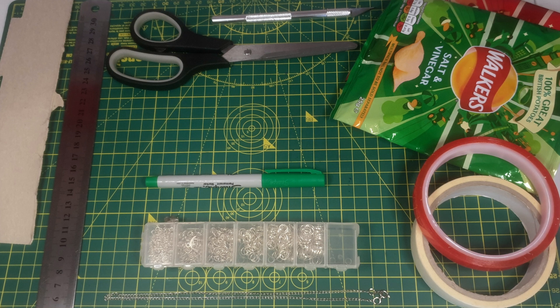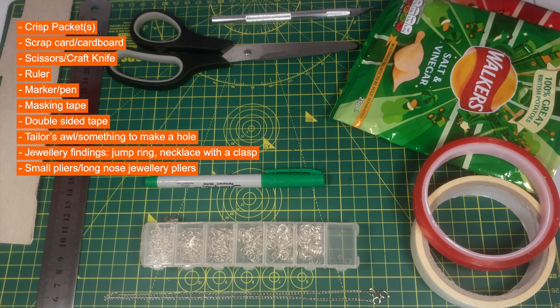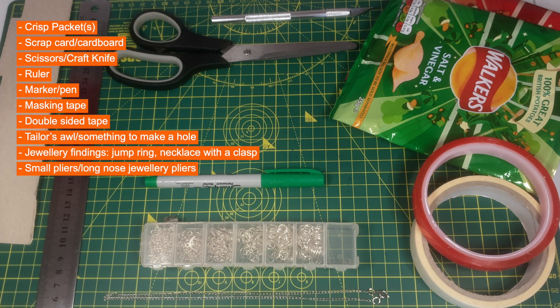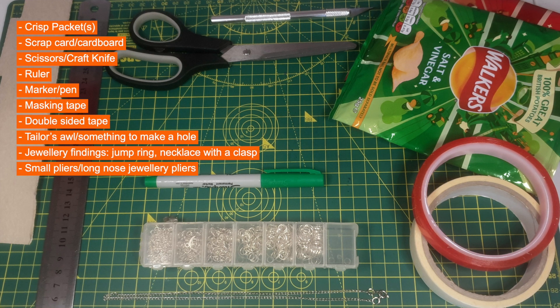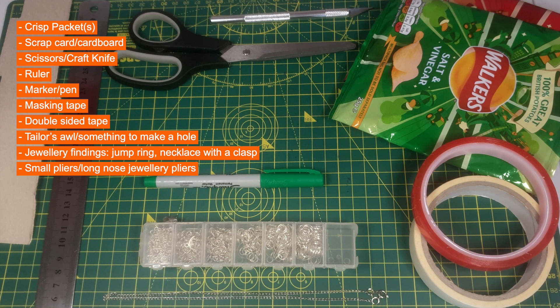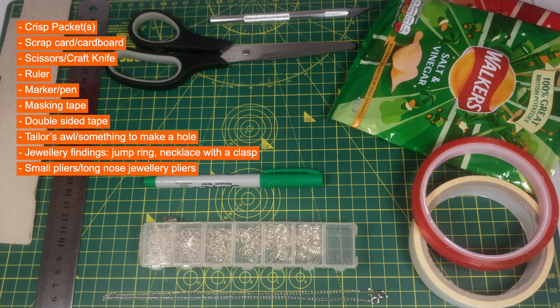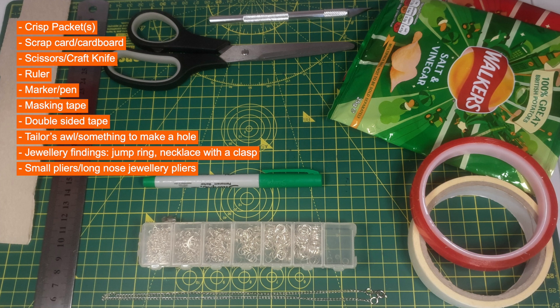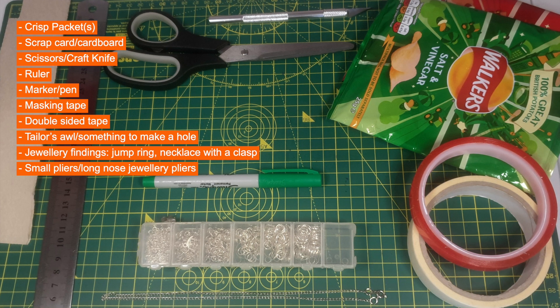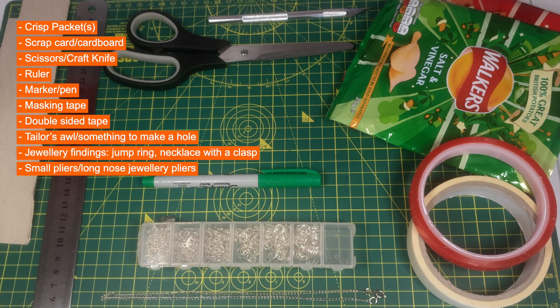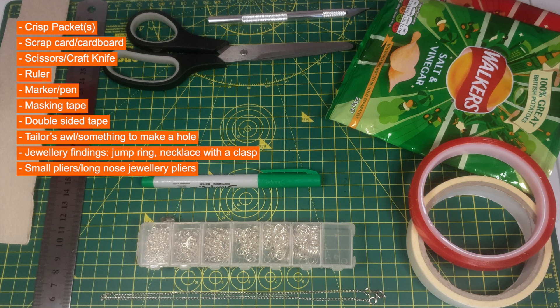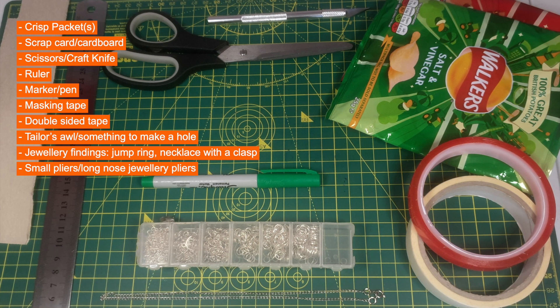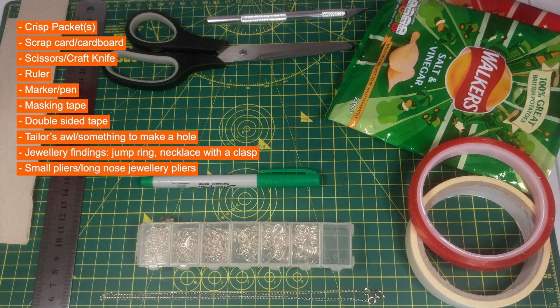So the first thing you need is a bit of a bonus because if you haven't already eaten a packet of crisps and have a spare packet lying around, you get the chance to eat a packet of crisps. So eat a packet of crisps then wash the packet out and dry it so it's ready to go for you to make with.